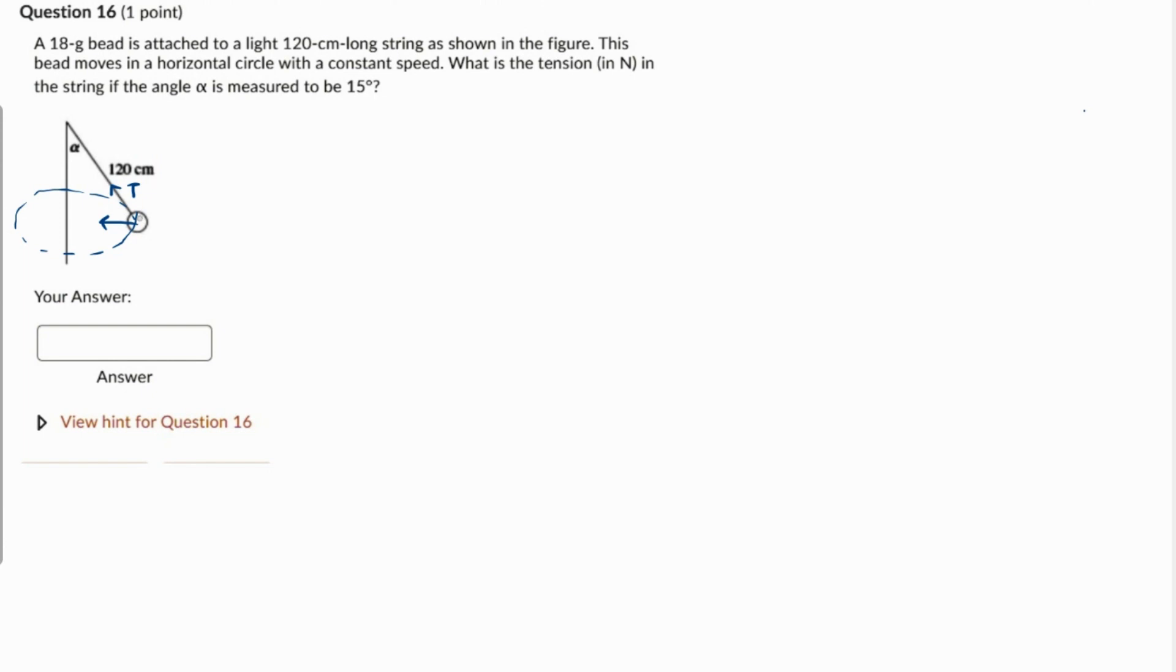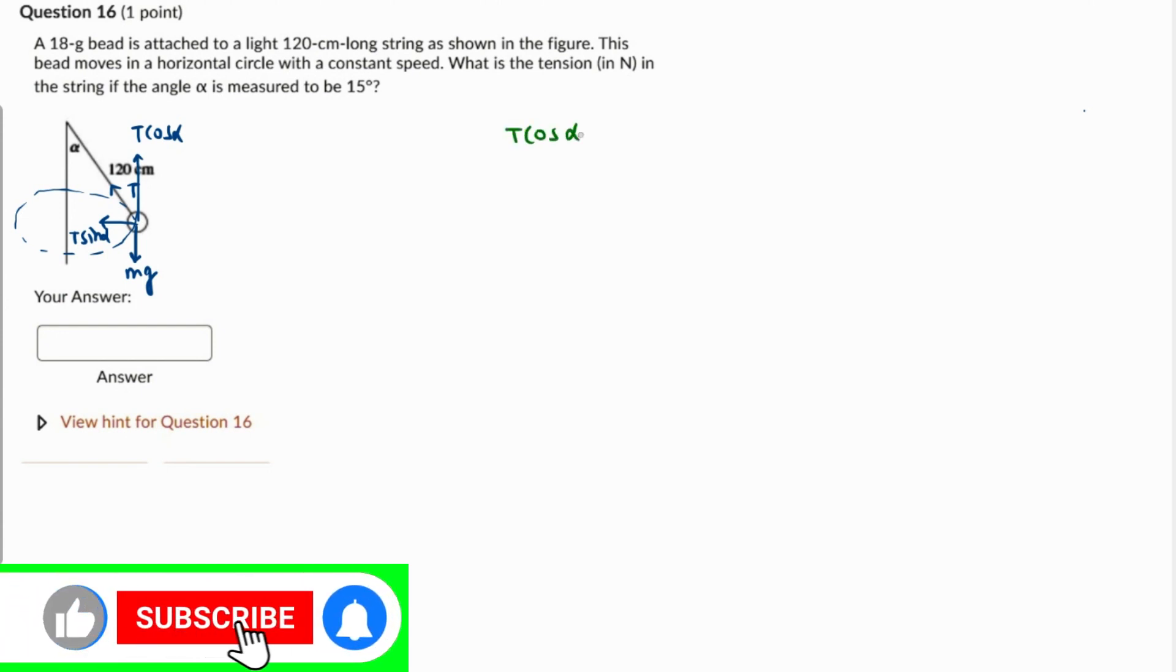This will become T cosine of alpha and this will become T sine of alpha, and this is mg. So this is the required force, and we know that it's not moving vertically. So T cosine of alpha should be equal to mg, and T sine of alpha should be equal to mv squared over r.